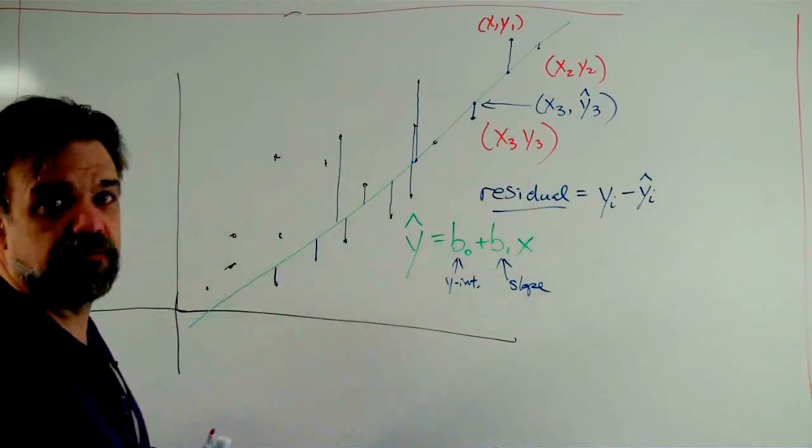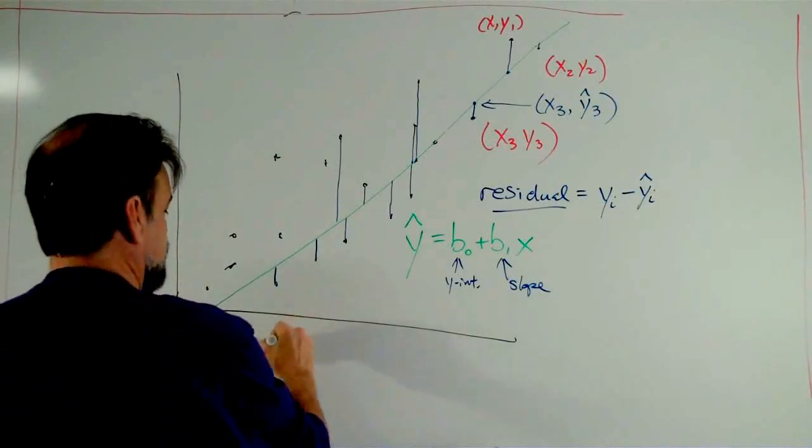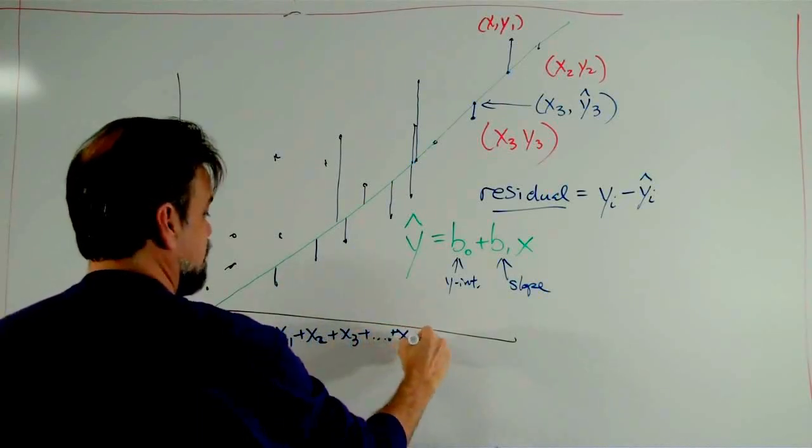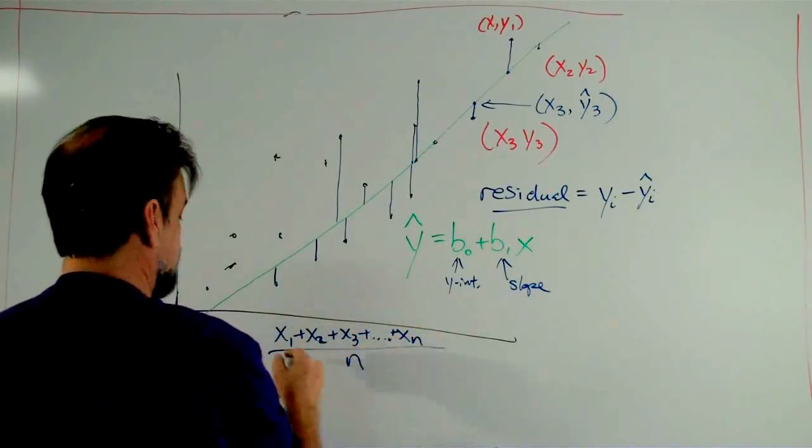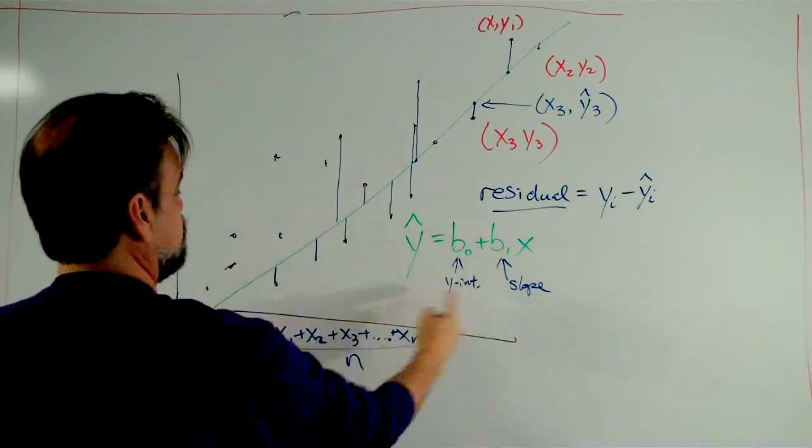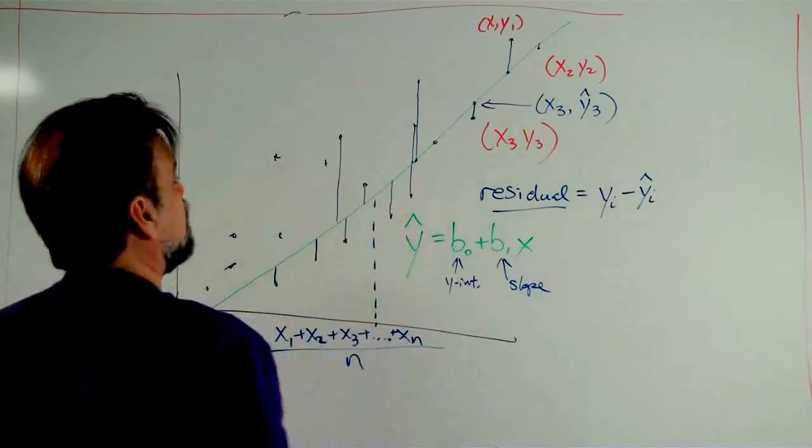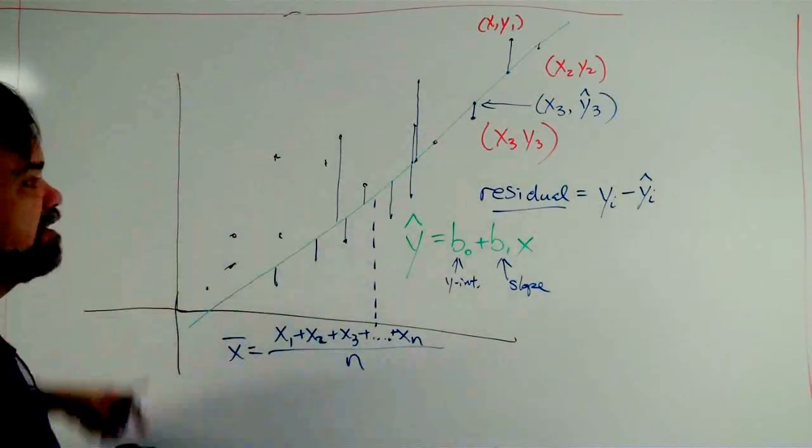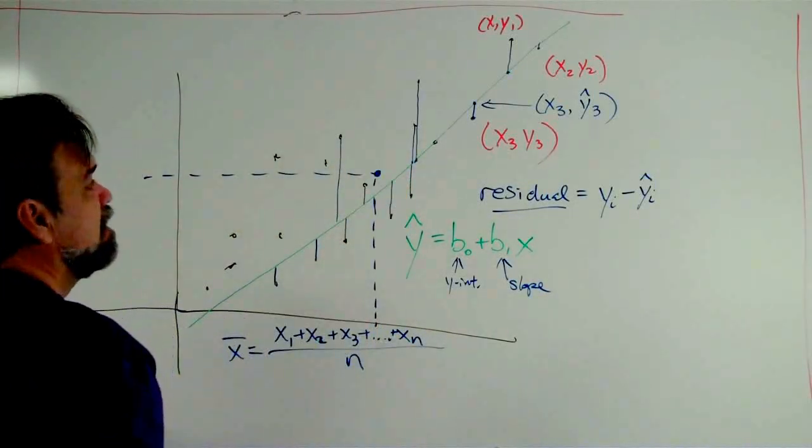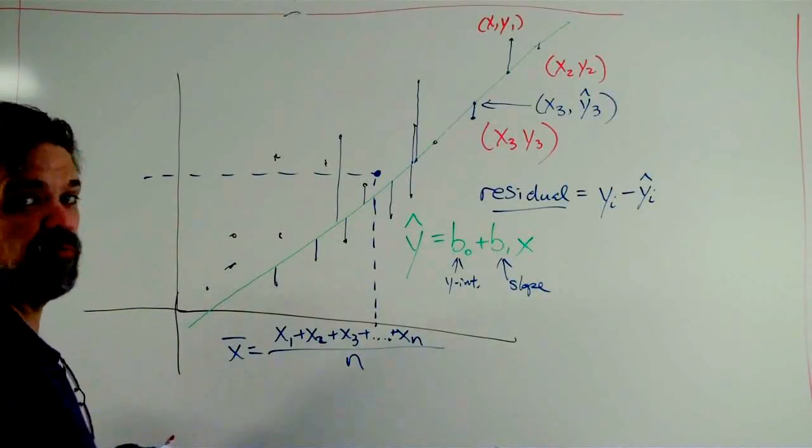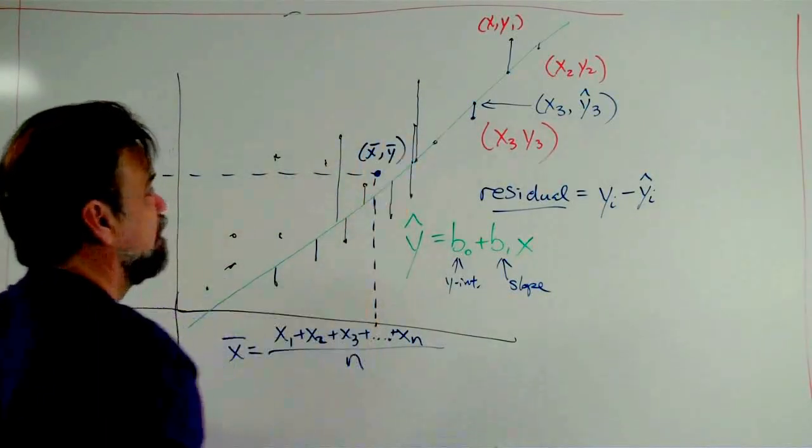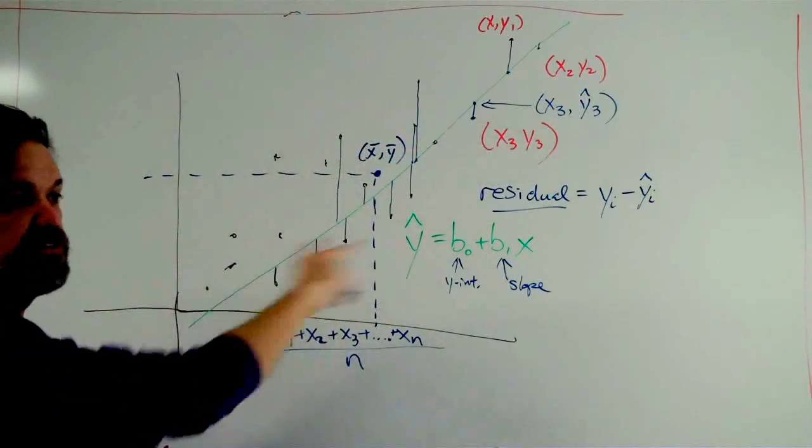If we take all of our x data and then take the average of it, so, x1 plus x2 plus x3 plus all the way up to x sub n, divide by n, that's going to get us the average of our x's, right? And it will fall somewhere in the middle. And if we take all of our y's and do the exact same thing, it will fall somewhere in here. Well, this tells you just how bad my line was. The line that I'm looking for, y hat, has to go through this point, the point x bar, y bar. And if it goes through that point, all the residuals are going to cancel out.